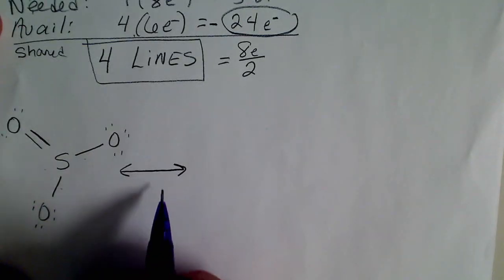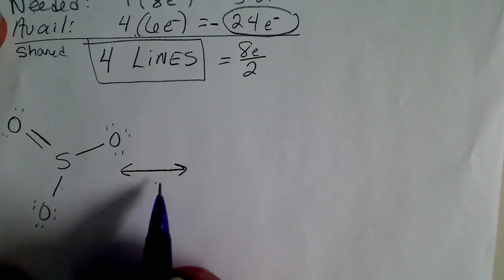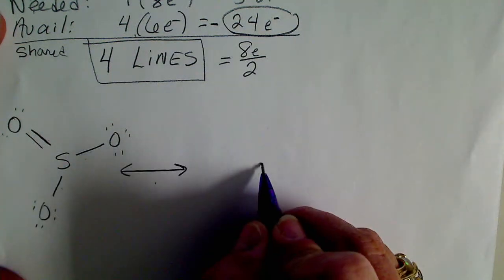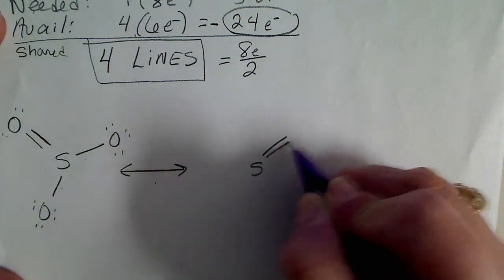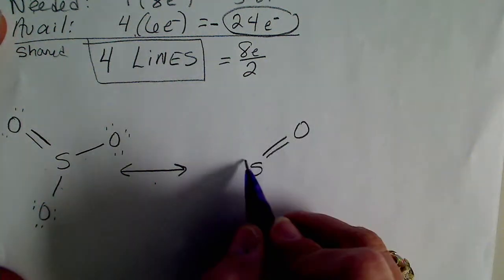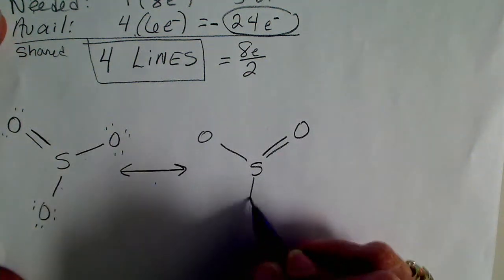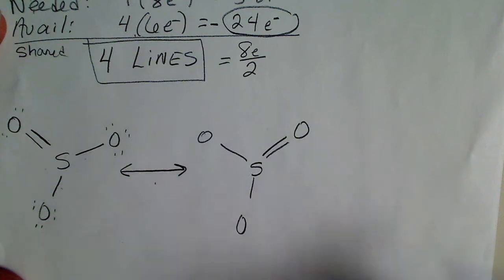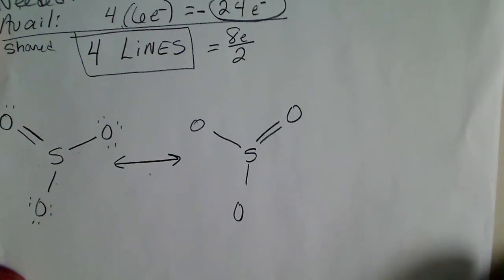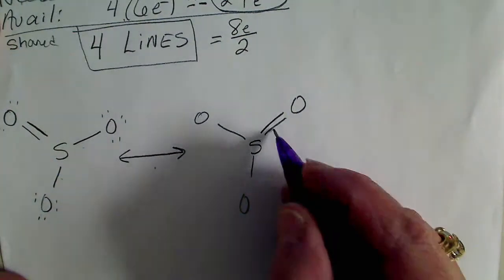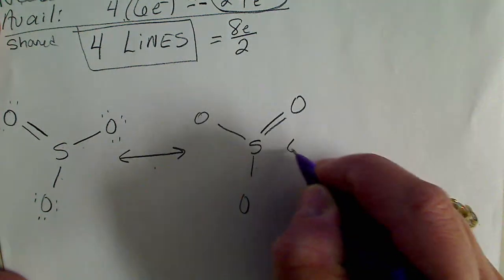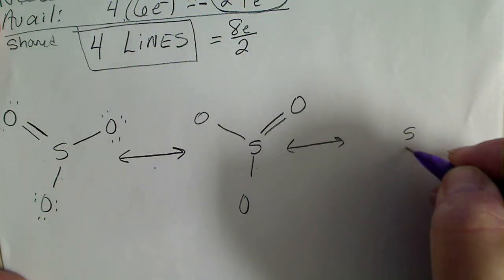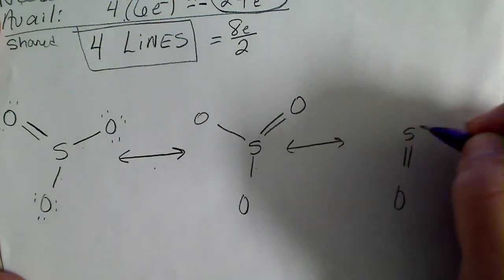We could place the double bond over here, so that would give us a second resonance structure. We show that by a double-headed arrow. Now we'll put our sulfur and we'll place the double bond on that oxygen. Just to save time, I'm not going to put all the lone pairs on the outer atoms. Then we could also put the double bond to the third oxygen down here.